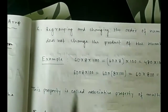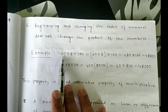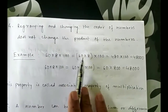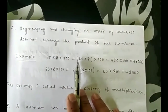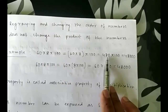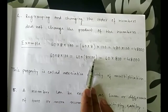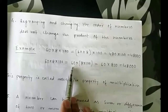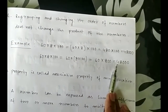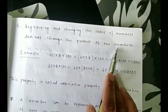Fourth property: regrouping and changing the order of numbers does not change the product of the numbers. For example, 60 into 8 into 100 — if we first regroup 60 and 8 together, then 60 into 8 is equal to 480, and 480 into 100 is equal to 48000. Now if we regroup 8 and 100 together, 8 into 100 is equal to 800, and 60 into 800 is also equal to 48000. Both values are the same. This property is known as the associative property of multiplication.